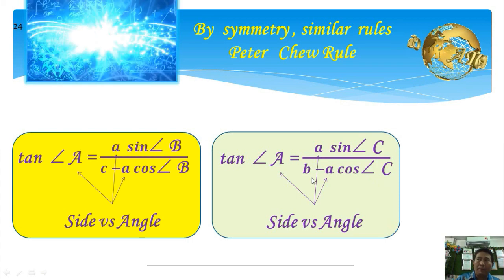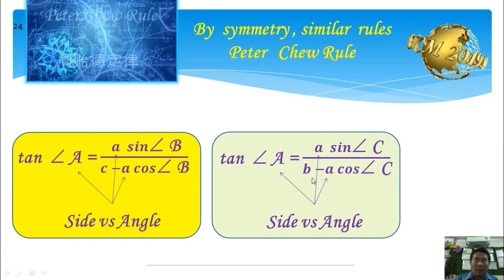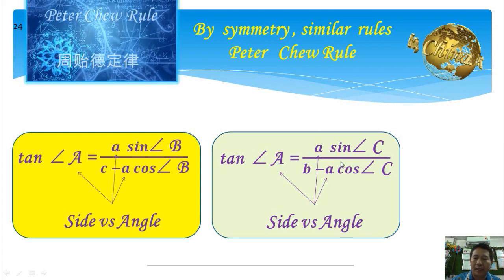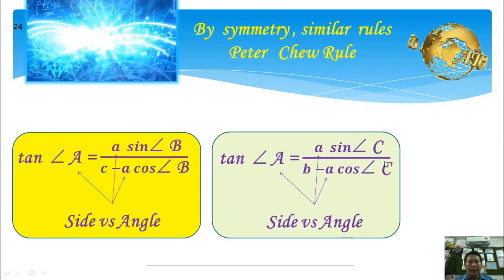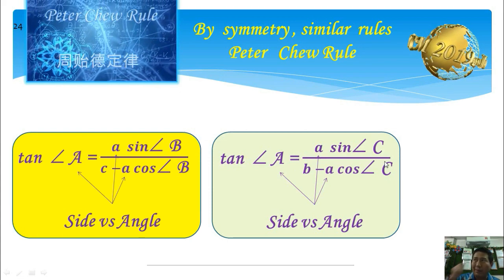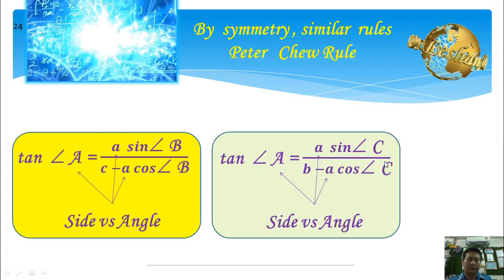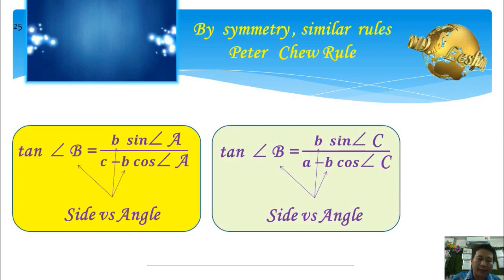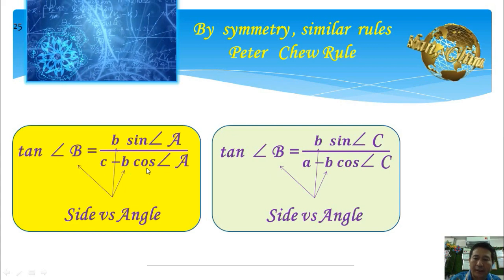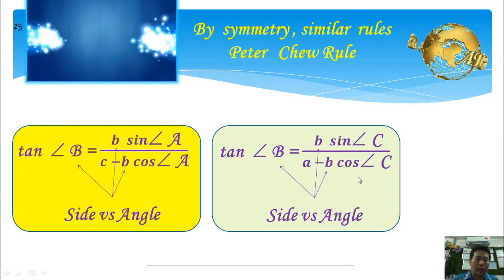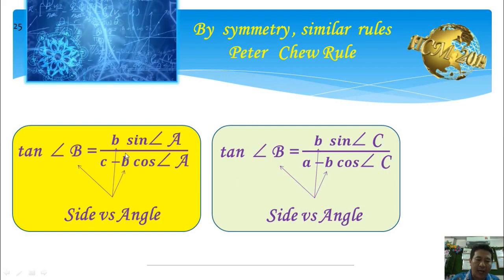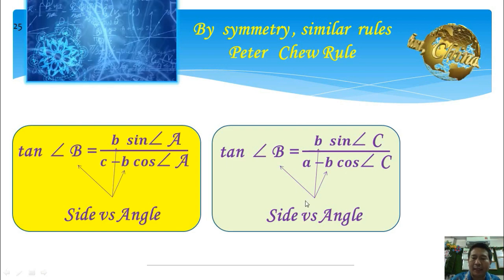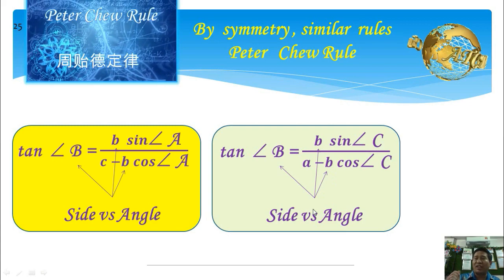The technique to remember Peter Chiu Rule is fairly simple — the denominator involves sides A, B, C in order. If you know angle B, the other side in the denominator is C; if you know angle C, the side is B. If the angle we want to find is B, then the side in the numerator must be b. Remember: side versus angle.